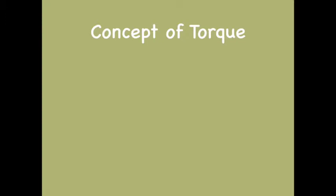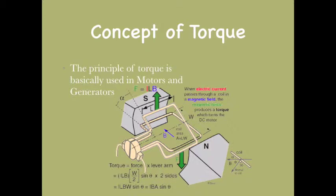Based on these concepts, let's learn how motors and generators work. In the given diagram, torque is responsible for the motion, and the direction of the arrow shown is the direction of the torque — your thumb points in the direction of the arrow.